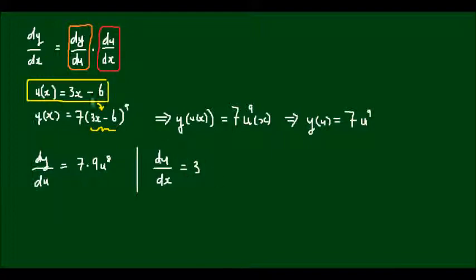So du/dx is equal to 3. x differentiates to 1, the constant 3 remains, and the constant 6 differentiates to 0. So du/dx = 3.